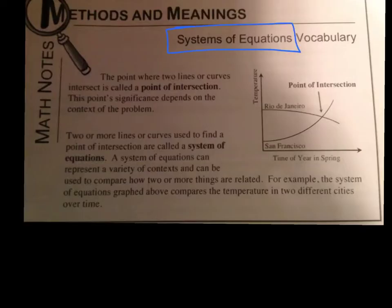First thing that we've been looking at is this point where two lines or curves intersect, that point of intersection. We've been looking at graphs and seeing what that means. That's called a point of intersection, and it's also called a solution to a system of equations.